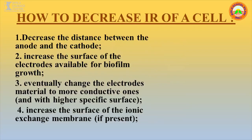To decrease internal resistance of a cell: decrease the distance between the anode and the cathode; increase the surface of the electrode available for biofilm; change the electrode's material to more conductive ones and with higher specific surface; increase the surface of the ionic exchange membrane if present.